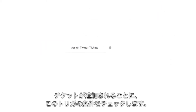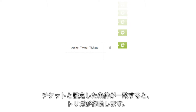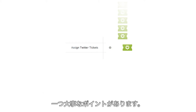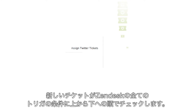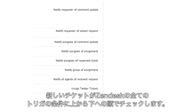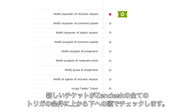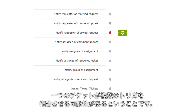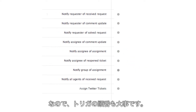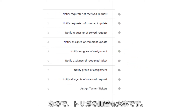Whenever tickets are updated or created, they're checked against the trigger. When a ticket matches the conditions we set, the trigger fires the action. Tickets are actually checked against all the triggers in your Zendesk, in order from top to bottom. This means that a ticket might fire multiple triggers, and therefore the order of your triggers is important.